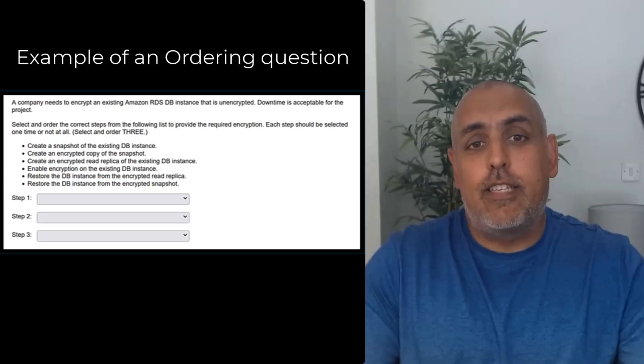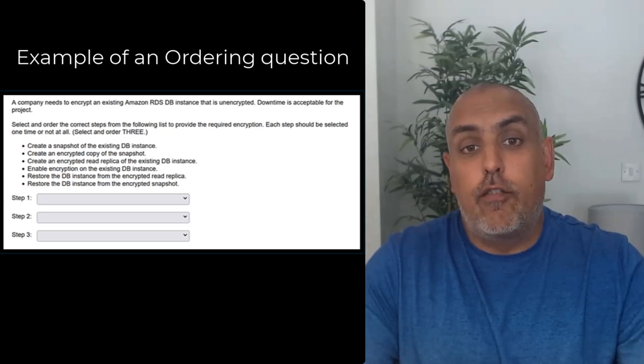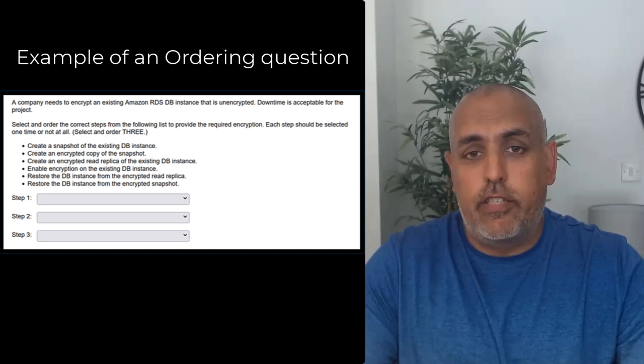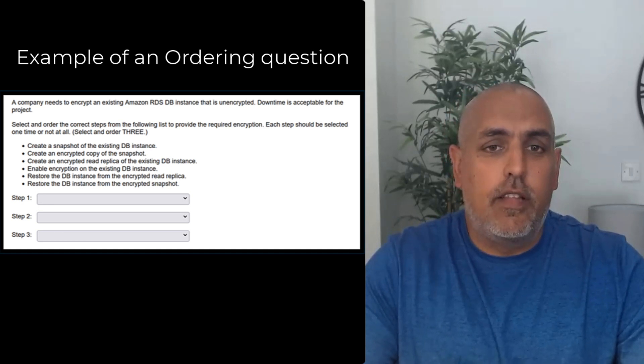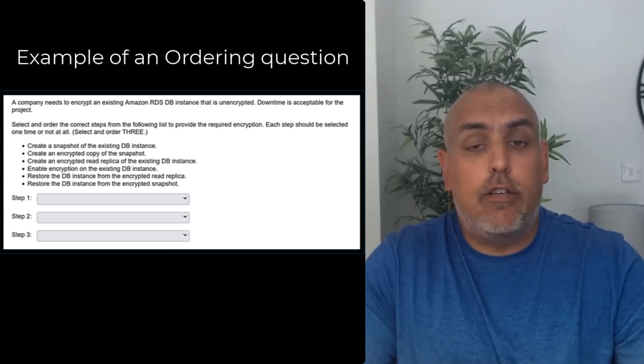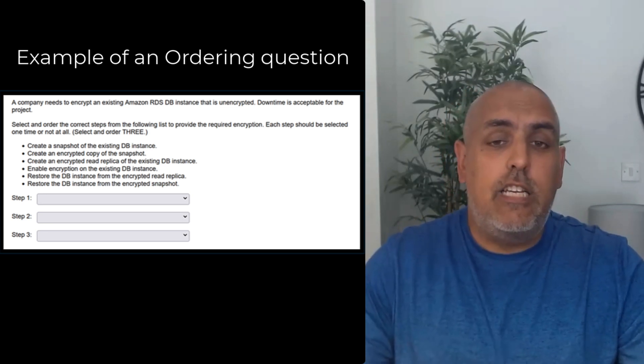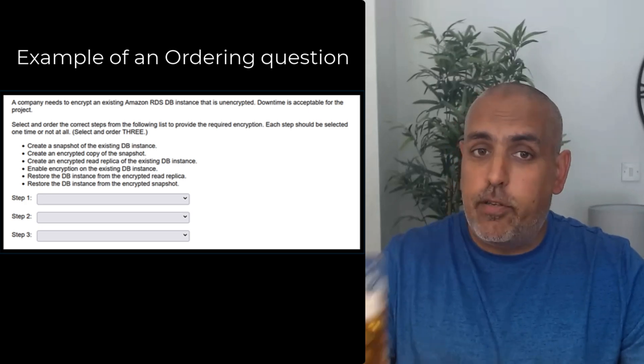If you get the correct response in the perfect order, you'll score full credit for the question. With these ordering questions, you're going to need real-world knowledge — more so than with a multiple choice question where you can normally eliminate one or two incorrect answers. AWS has provided the following example of an ordering question in their blog post about these question changes, and I've put the link to that blog post in the description. Here you can see that you are only required to select three out of a possible six options, and you must put them in the right step order: step one, step two, and then step three.